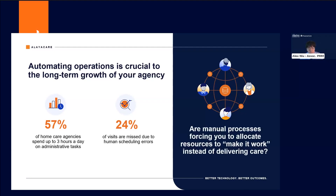Are manual processes forcing your agency to allocate resources just to make things work, instead of focusing on delivering better care? The time and effort spent on manual tasks could be better utilized in providing personalized care to clients, improving outcomes, and driving growth for your agency. But as long as these inefficiencies persist, agencies will continue to struggle to meet the demands of an ever-evolving industry. Automating operations is about empowering you to deliver better care, improve client satisfaction, and drive long-term growth.